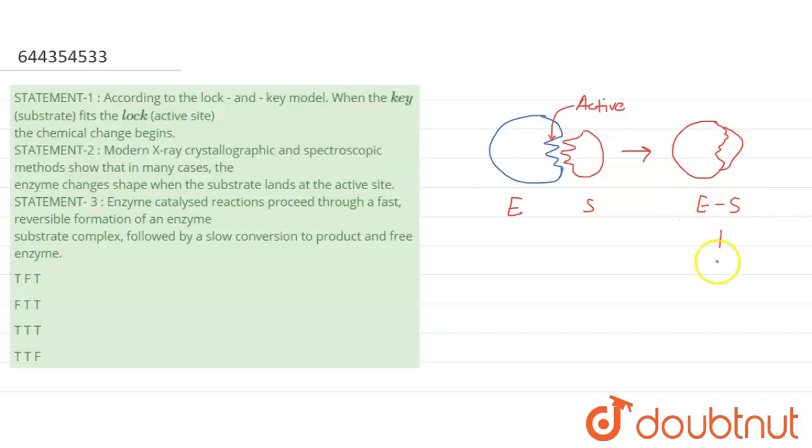Then further this enzyme substrate will convert into product. Then finally a product will be formed. And your substrate, sorry, this enzyme, it will leave the molecule. Okay, now the first step will be faster and second step will be slow.